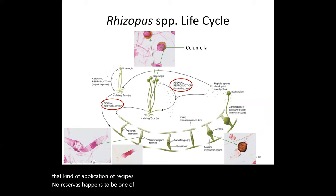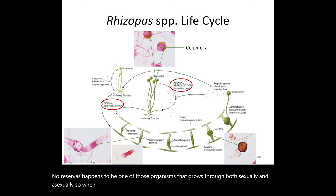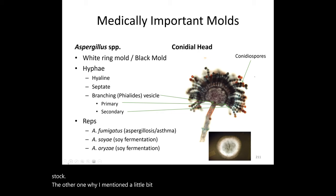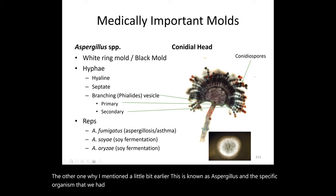Rhizopus reproduces both sexually and asexually. When you observe it under the microscope, you'll see the sexual version — the dikaryon or zygospore — forming a stalk about to release spores. That's where the sexual reproduction of Rhizopus becomes visible in the lab.